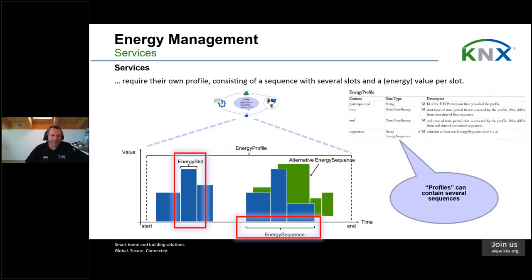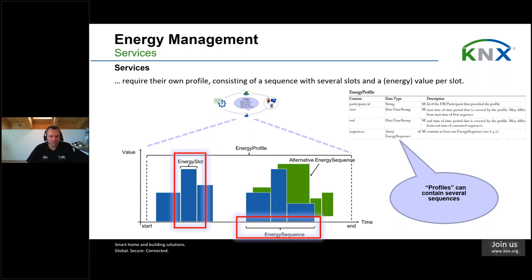A forecast looks like a sequence of bars — slots — where each slot defines an amount of energy with a starting and end time. Consecutive energy slots build an energy sequence. There is also the possibility that a producer delivers alternative energy sequences to the HEMS, which may select one or the other. For photovoltaics, this is not applicable since they have only one sequence — it tells you the expected amount of energy for the next time period, for example four kilowatt for two hours.